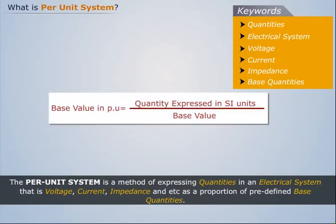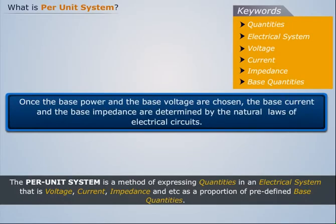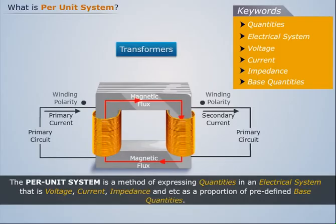All other base quantities are derived from the two base quantities described above. Once the base power and the base voltage are chosen, the base current and the base impedance are determined by the natural laws of electrical circuits.